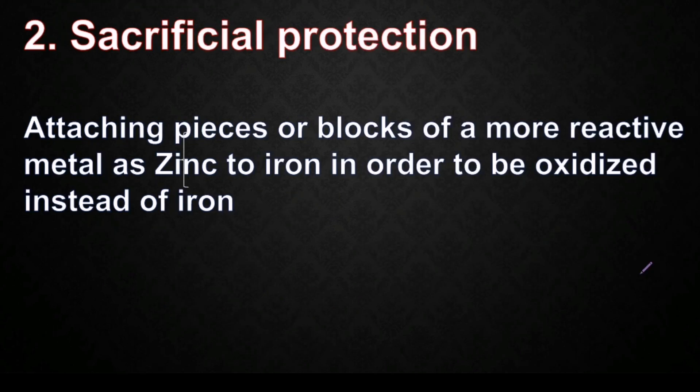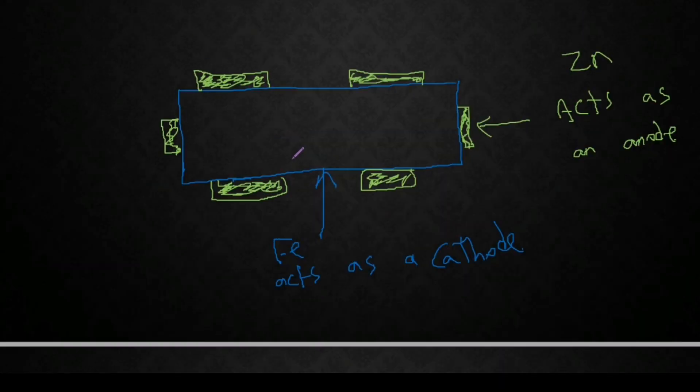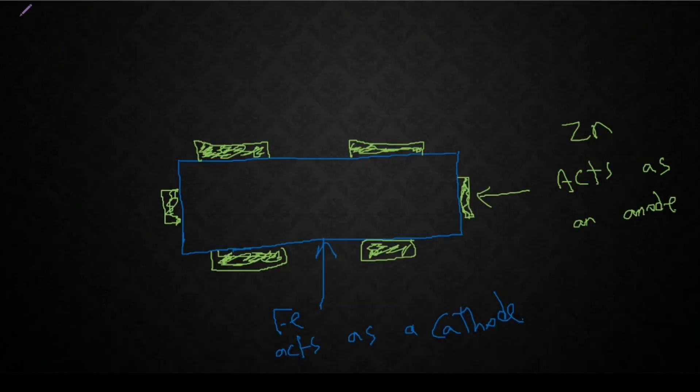The second method is sacrificial protection. This method we attach pieces or blocks of a more reactive metal like zinc to iron in order to be oxidized instead of iron. So here we have iron which is attached to some blocks or pieces of zinc. So you see guys, this is not entirely coating with the zinc as in galvanization, only we have some blocks which are fixed nearby the surface of the iron. So now zinc, because it's more reactive than the iron.